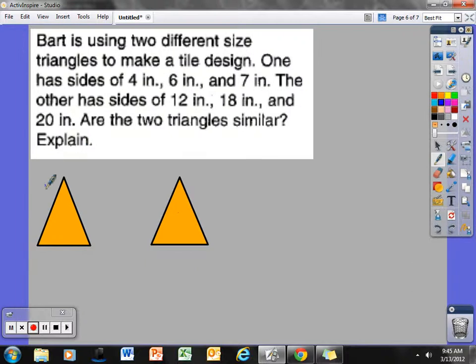This is 4, this is 6, this is 7. This is going to be 12, this is going to be 18, and this is going to be 20. Because 4 corresponds with 12, 6 corresponds with 18, and 7 corresponds with 20. We are trying to figure out if these two triangles are similar, and then it says explain.